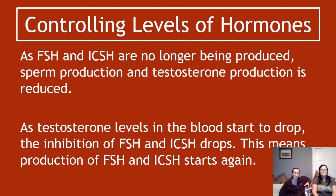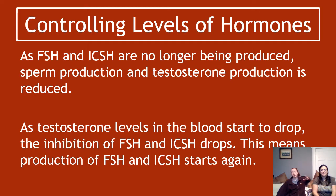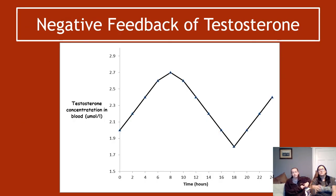When high testosterone levels prevent FSH and ICSH production, sperm production and testosterone production are also reduced — a knock-on cycle. No FSH and no ICSH means no sperm is being produced and no testosterone is produced. As testosterone levels then drop, it's no longer inhibiting the pituitary, since testosterone is the thing going back to the pituitary to cause that inhibition. So FSH and ICSH can rise again, and the cycle repeats.